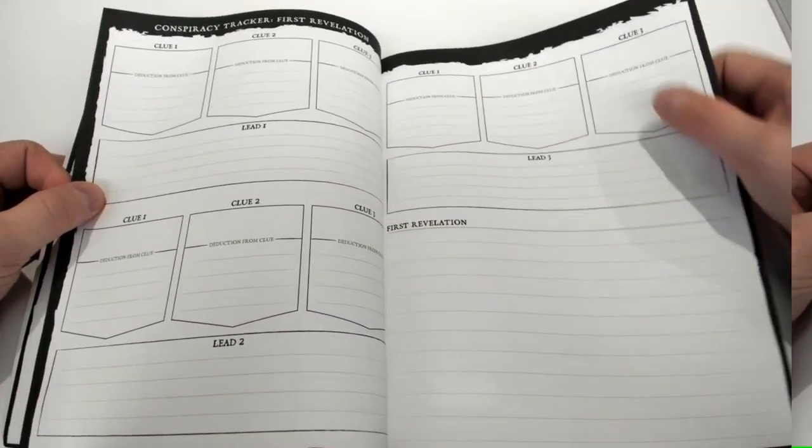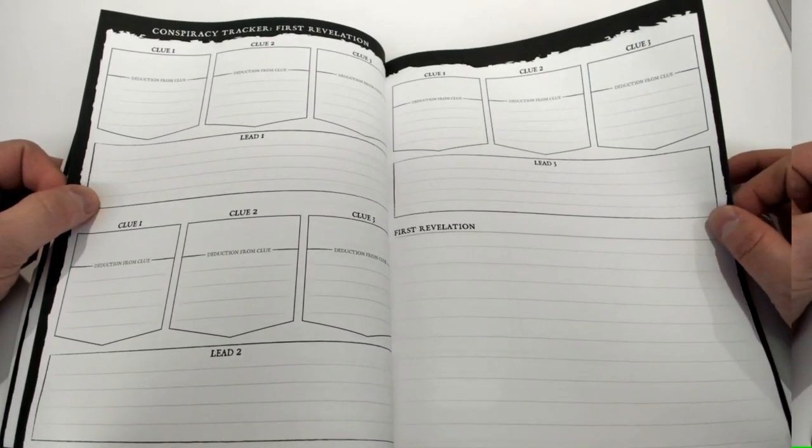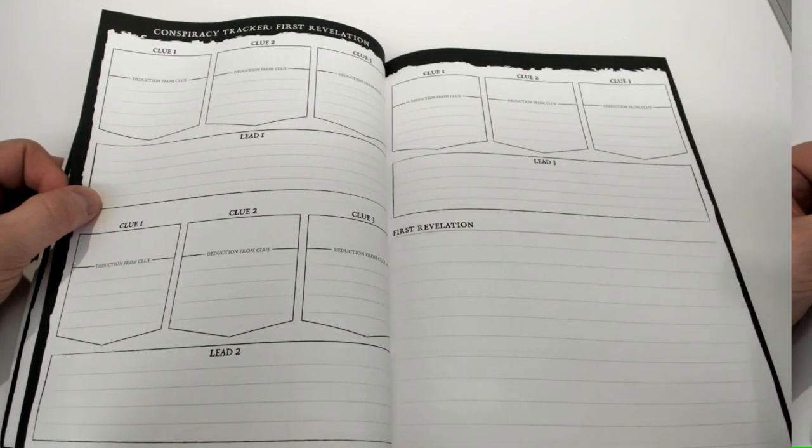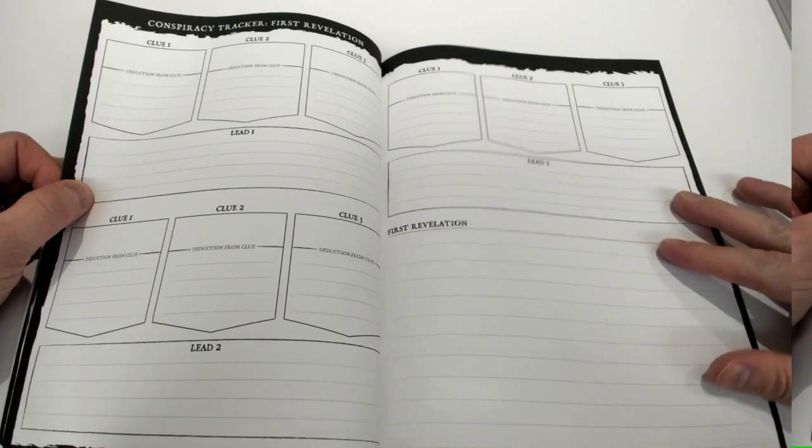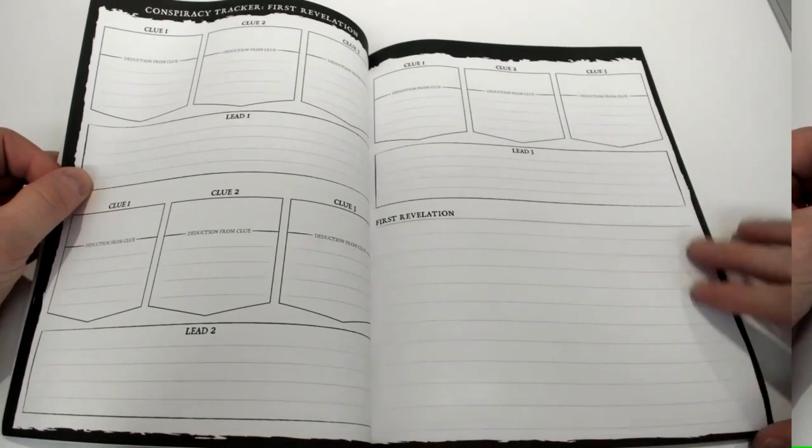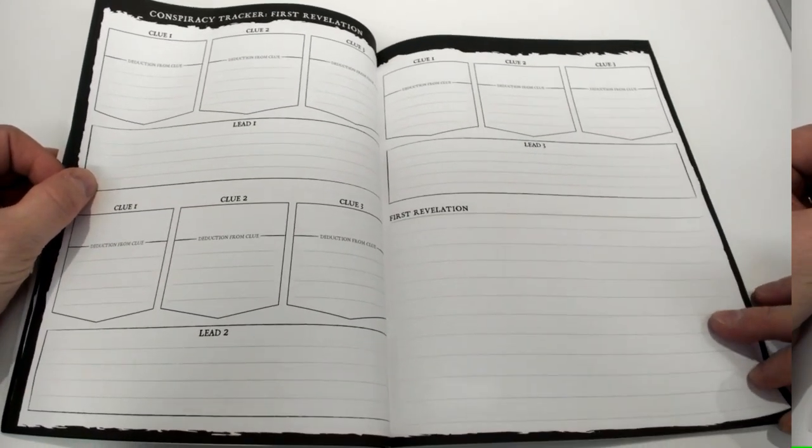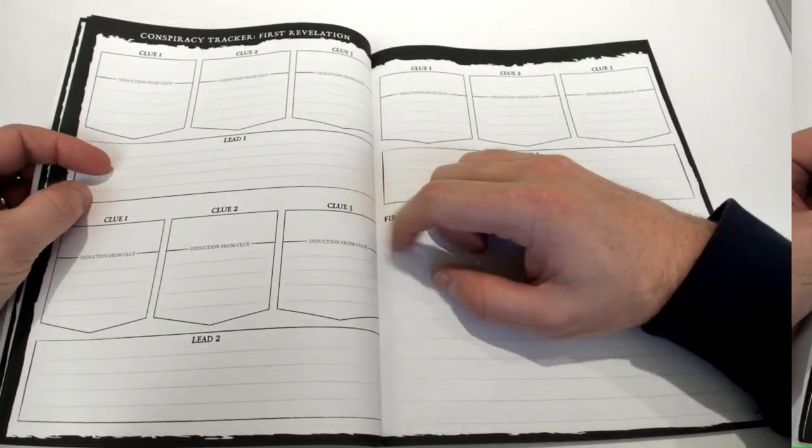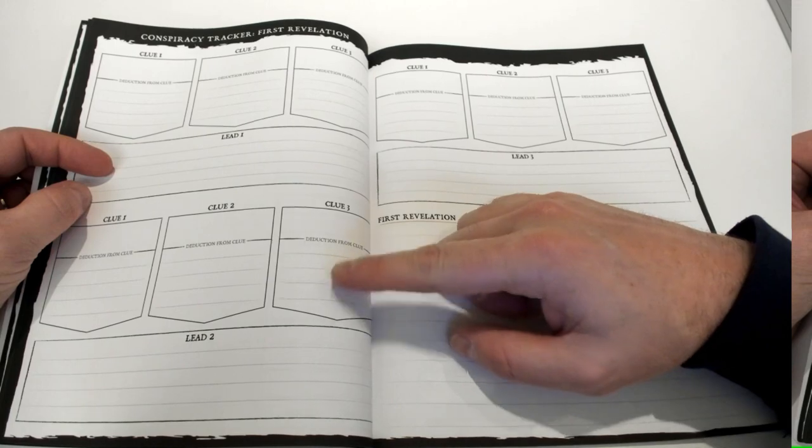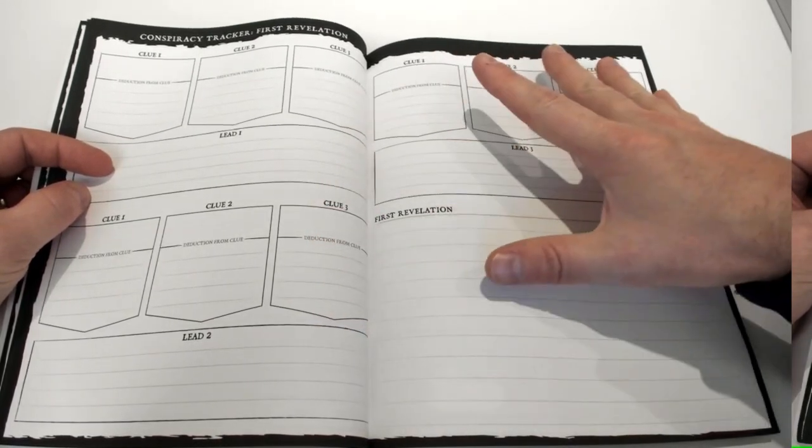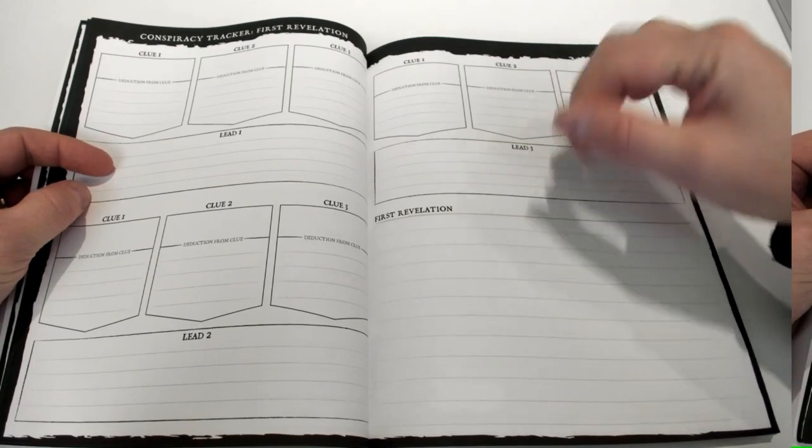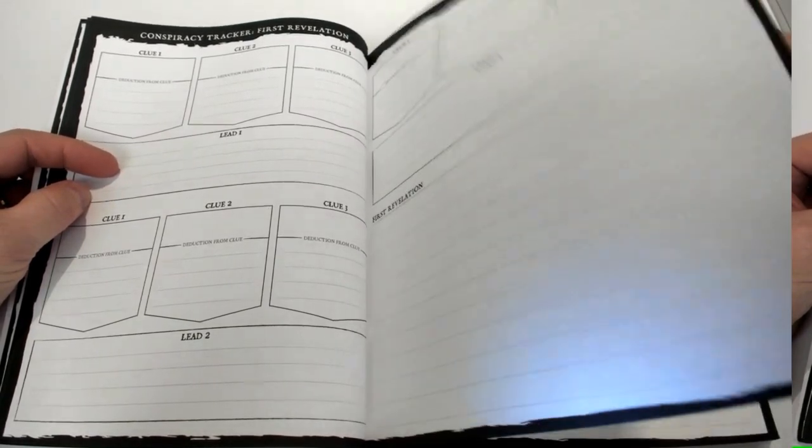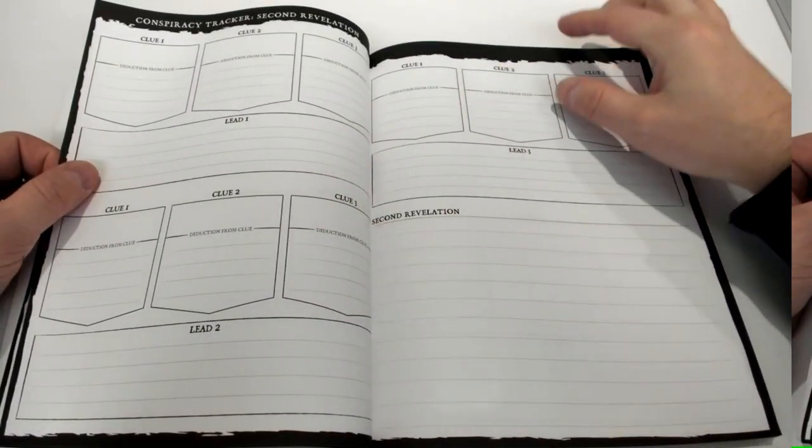We also have the conspiracy tracker including the revelations. This is a big thing we felt was a gap in tracking - we didn't really have anything like this previously. So we created this where you basically have your clue, here's what the player characters deduce from the clue, and here's the lead they determined. Nine clues and three leads determines a revelation, and any good conspiracy has three major revelations that will eventually lead to the center of the conspiracy.